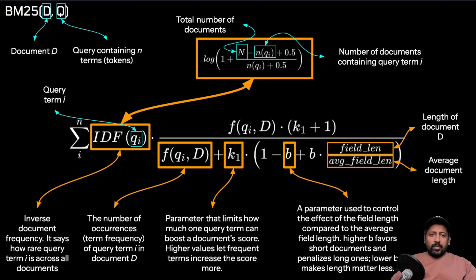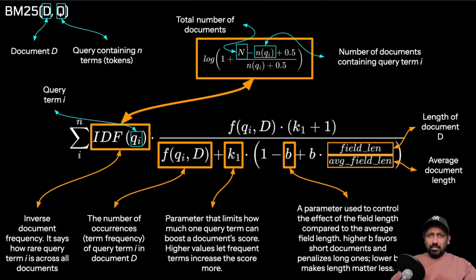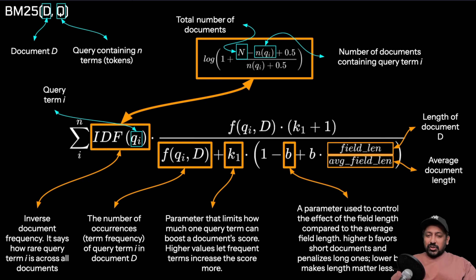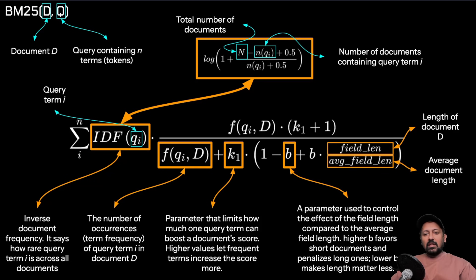For parameter b, since it's multiplied by field length divided by average field length, b controls how we normalize by the length of the given document. If b is 0, you completely ignore document length. If b is 1, you fully normalize by length, so long documents are penalized more. The typical value for b is anywhere between 0.7 and 0.9, but you can experiment with any value and see how it changes your search results. Importantly, BM25 saturates — if a term appears 50 times versus 10 times, it doesn't get five times the score. There are diminishing returns.